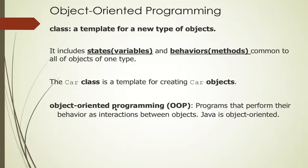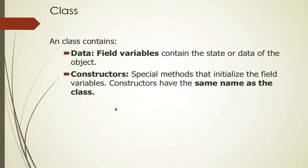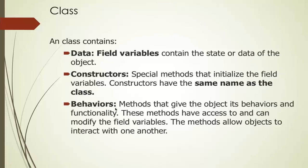So in object-oriented programming, the philosophy is that our program should center around the interactions between objects. Java is object-oriented. The syntax for creating a class is: you say class, and then the class name, followed by curly braces, where in between the curly braces is the body of the class. A class contains data, which is the variables that represent the state or the data of the object. It also contains constructors, which are special methods that initialize those variables. Constructors have the same name as the class. And then behaviors, which are the methods that give the object the functionality. These methods can change and access the variables, and the methods allow the objects to interact with one another.